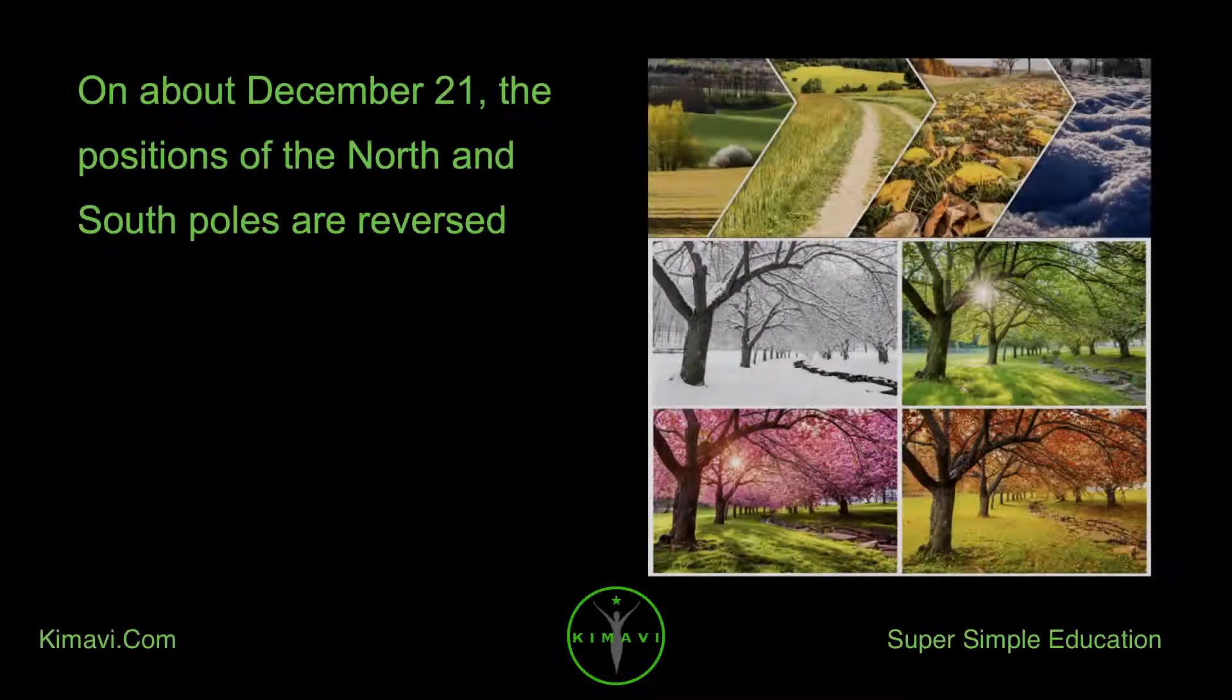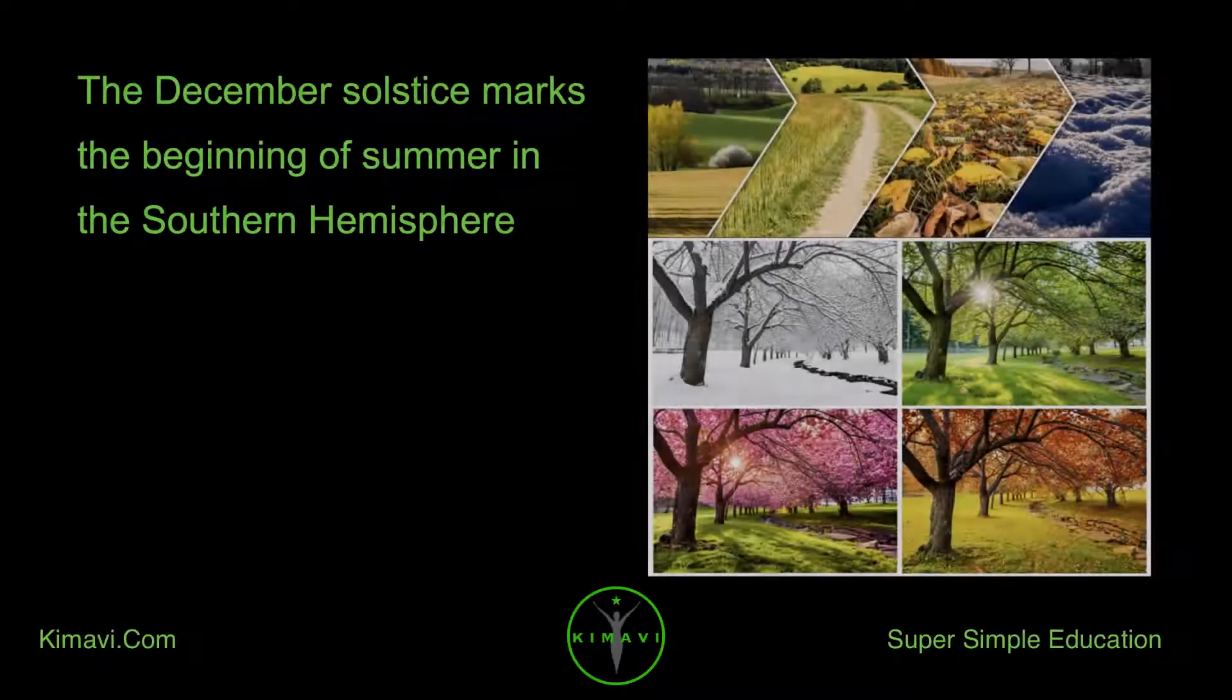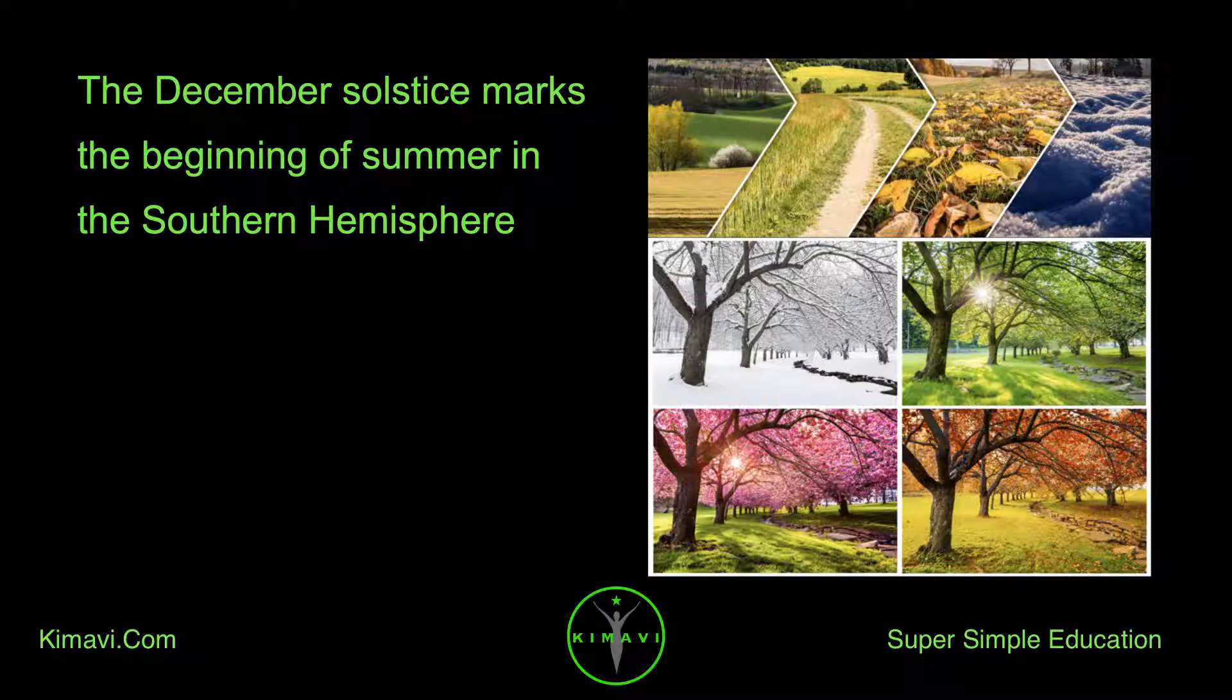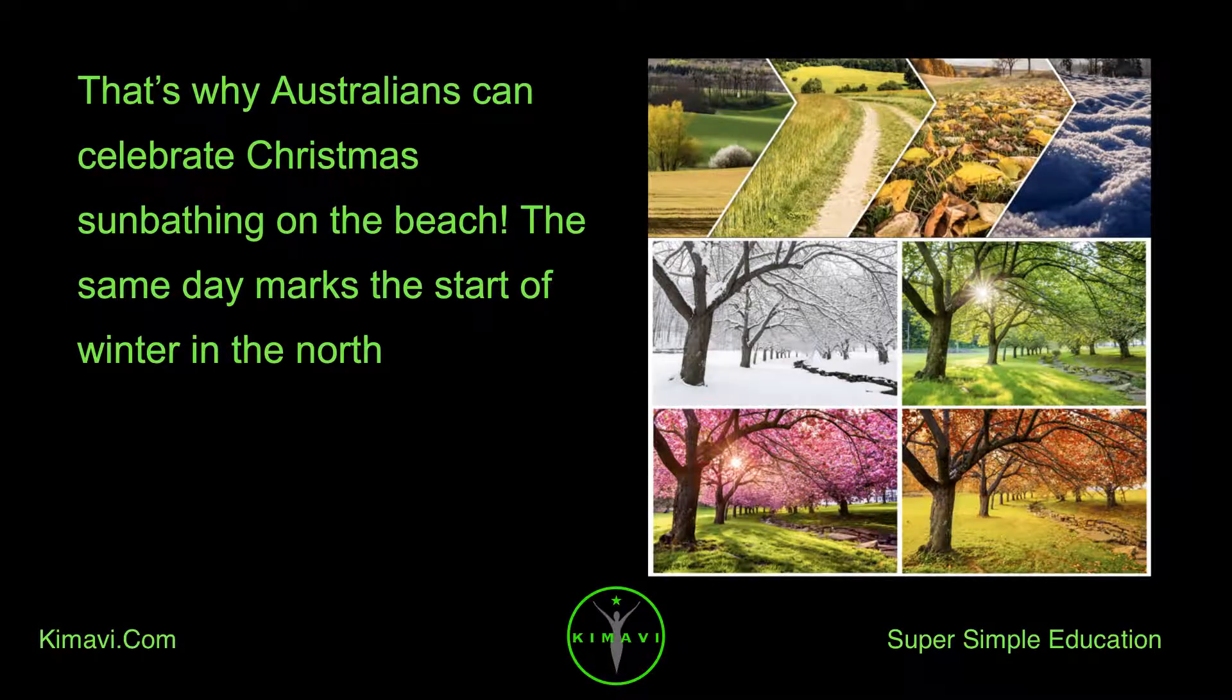On about December 21, the positions of the North and South Poles are reversed. The December solstice marks the beginning of summer in the Southern Hemisphere. That's why Australians can celebrate Christmas sunbathing on the beach. The same day marks the start of winter in the North.